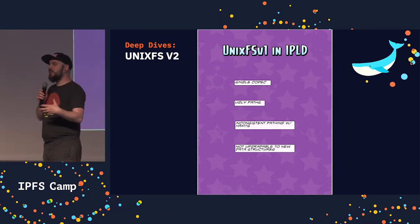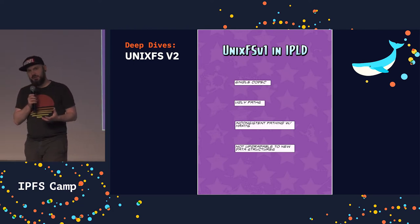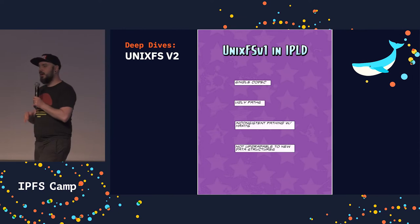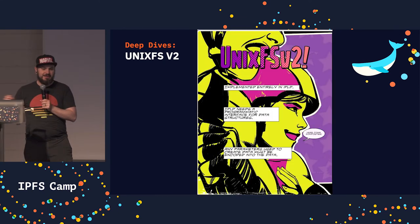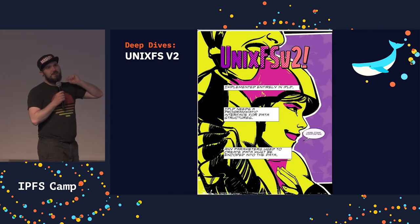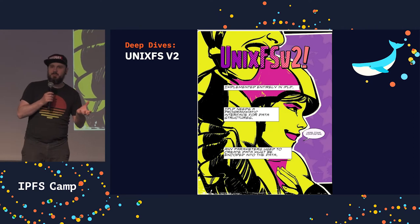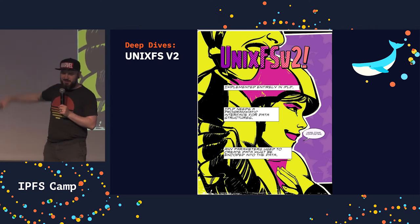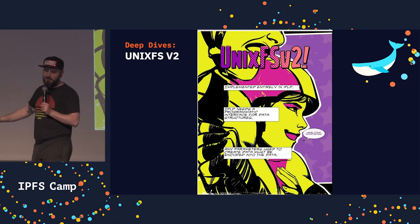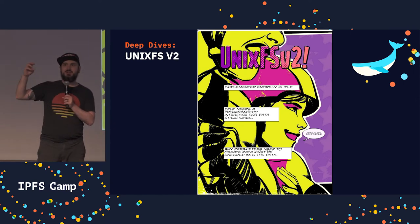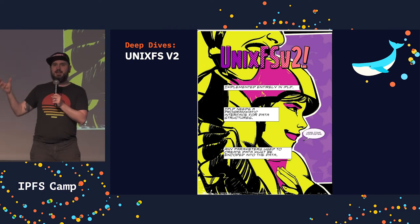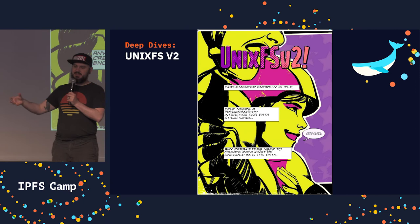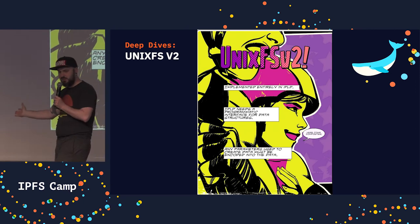We definitely need a way to upgrade these data structures in the future without updating every single client that ever talked to a data structure. IPLD really needs a model for implementing data structures and then putting that implementation into the data itself. This would be a programmatic interface so that you could have nice paths for your data. UnixFSv2 could just implement the nice IPFS pathing in this IPLD system, and that would be available to everyone else who uses IPLD as well.